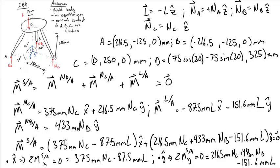By dotting this vector equation with the y vector, we get the following equation or the sum of the moments in the y direction about A is equal to 216.5 millimeters N_C plus 435 millimeters N_B minus 151.6 millimeters times L.